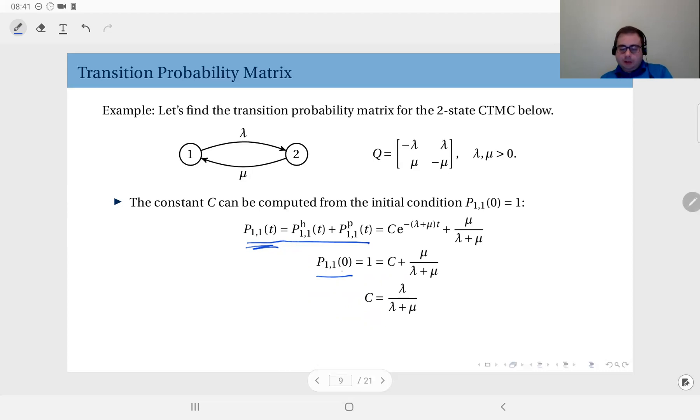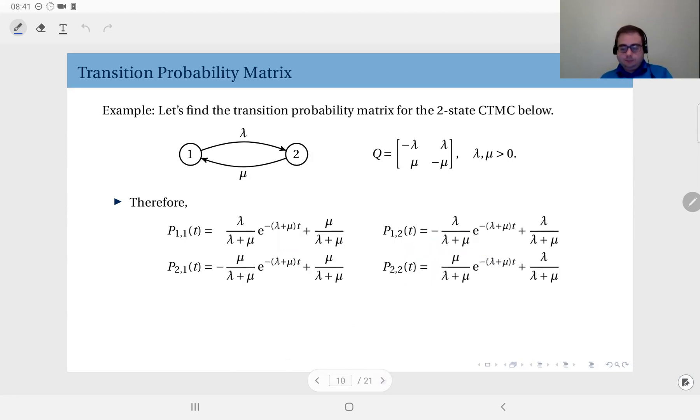So at time t, just plug in zero in this expression. So this becomes one. So that is C plus mu divided by lambda plus mu. This should be equal to one. That means C equals lambda divided by lambda plus mu. So plug it in. And this is your solution. P11 equals lambda over lambda plus mu times e to the power minus lambda plus mu times t plus mu divided by lambda plus mu.